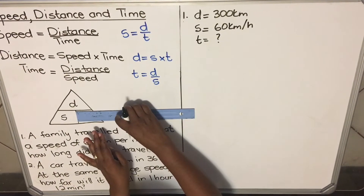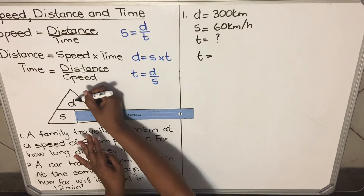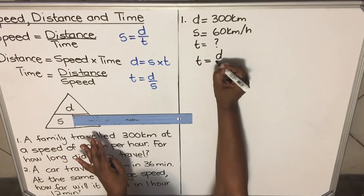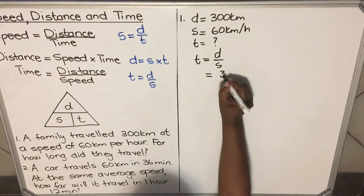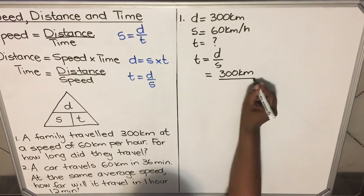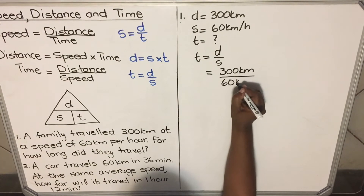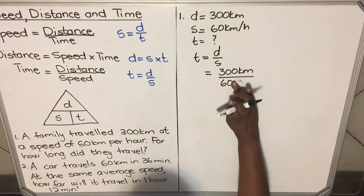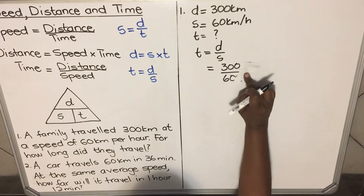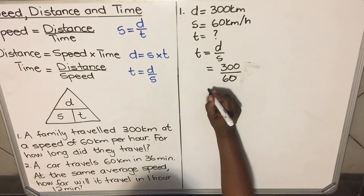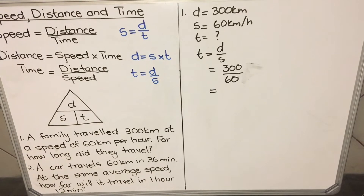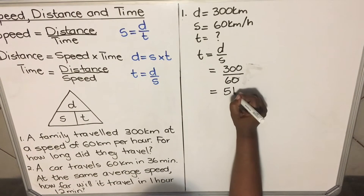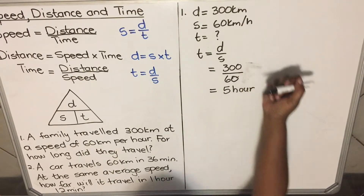Using the triangle to find the formula — we are calculating time, so time = distance divided by speed. My distance is 300 and my speed is 60. So time = 300 divided by 60, which gives us 5. They took 5 hours — I know it's hours because my speed was in kilometers per hour.